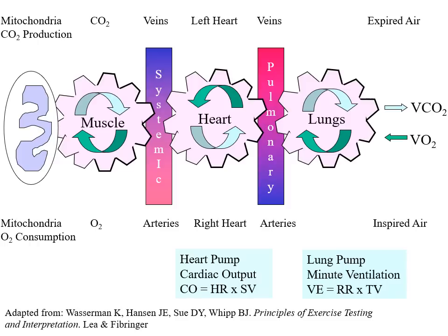The heart is also a pump — it doesn't pump air, it pumps blood. Instead of minute ventilation, we talk about cardiac output. Stroke volume is the amount of blood squeezed out per beat — about 70 mL under normal circumstances. At a heart rate of 72 beats per minute, 70 times 72 equals roughly five liters — that is the cardiac output, the amount of blood coming out of the heart.